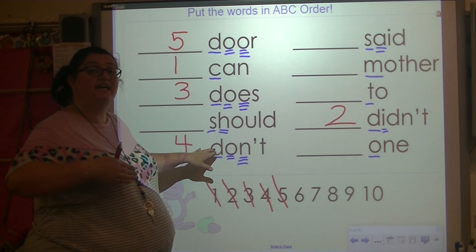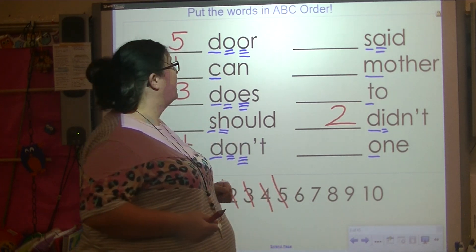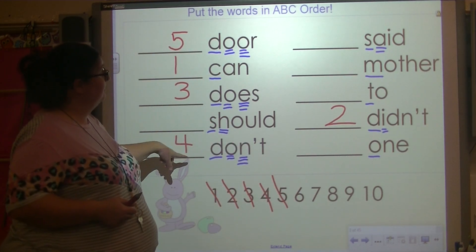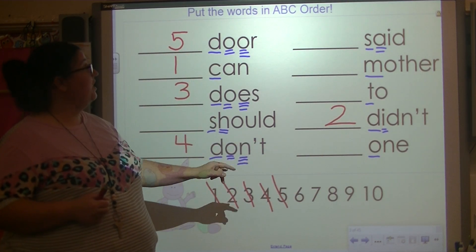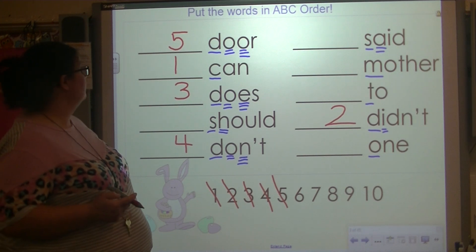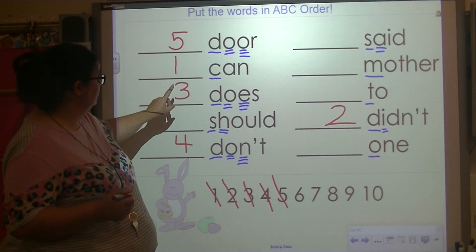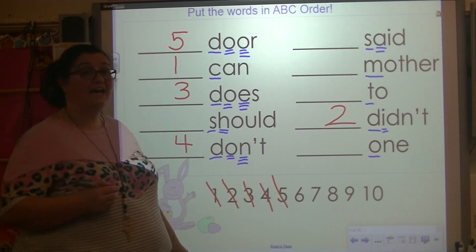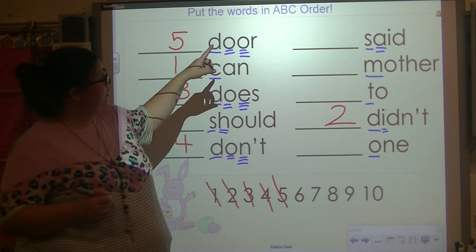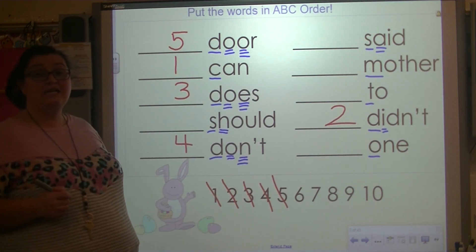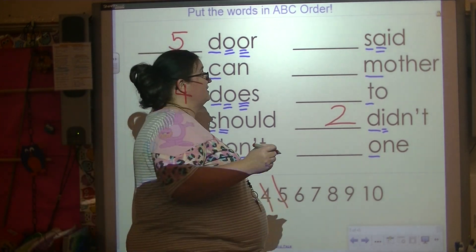After D is E — do we have an E word? No. F? No. G? No. H? No. I? No. J? No. K? No. L? No. M? Yes! Mother. So mother is number six.